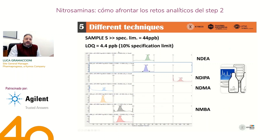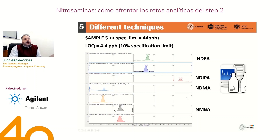Therefore, as an example, for sample five with a specification limit of 44 ppb, we developed a method with an LOQ of 4.4 ppb for these nitrosamines, and these are the chromatograms at the LOQ concentration. We added internal standards for NDMA and NMBA — the most critical in HPLC — in order to improve the performance of the method, and also the deuterated internal standard for MDEA, which can be used also for the other analytes eluting in the same region of the chromatogram.